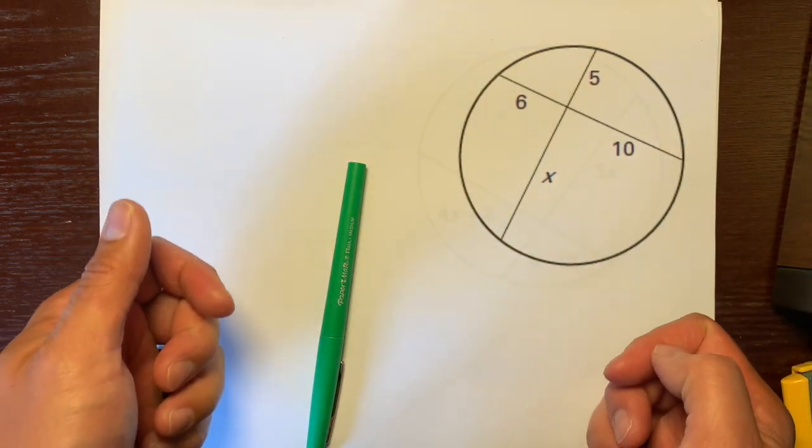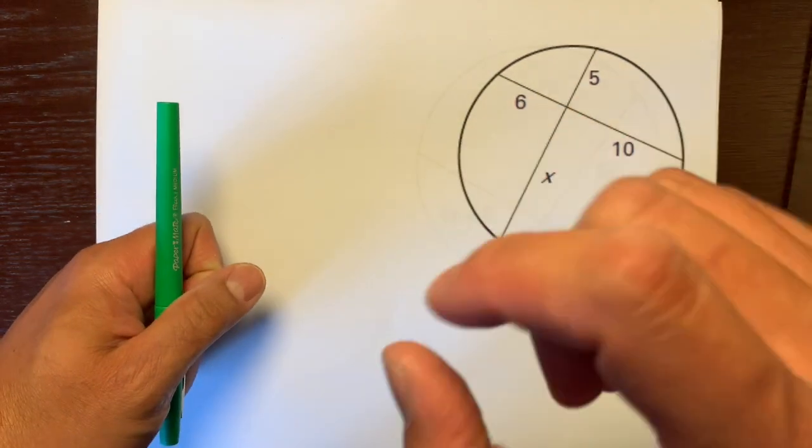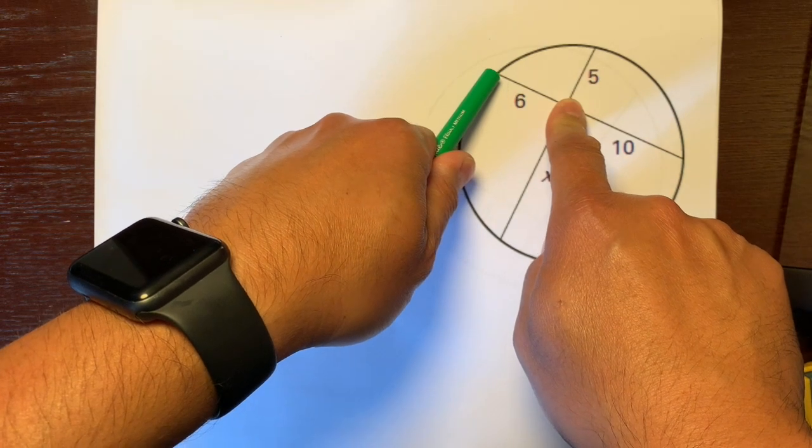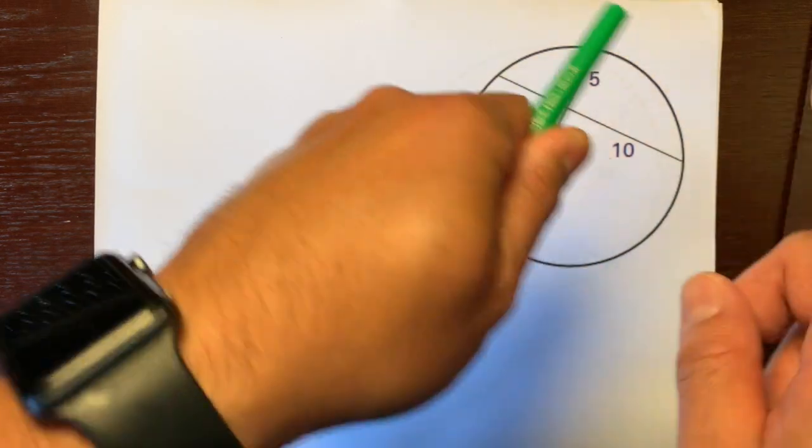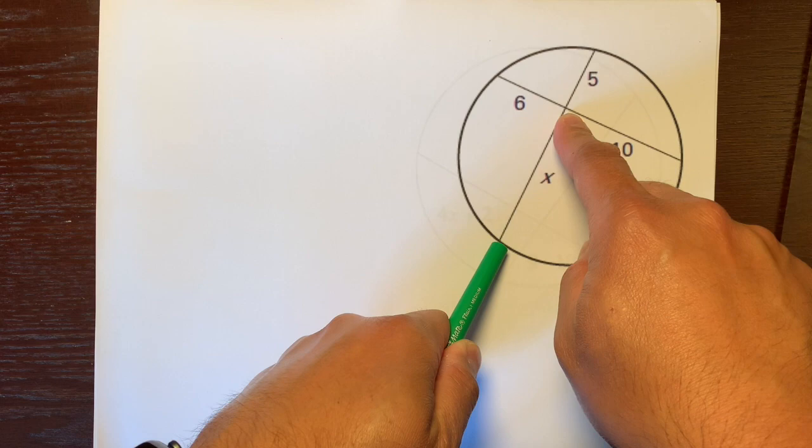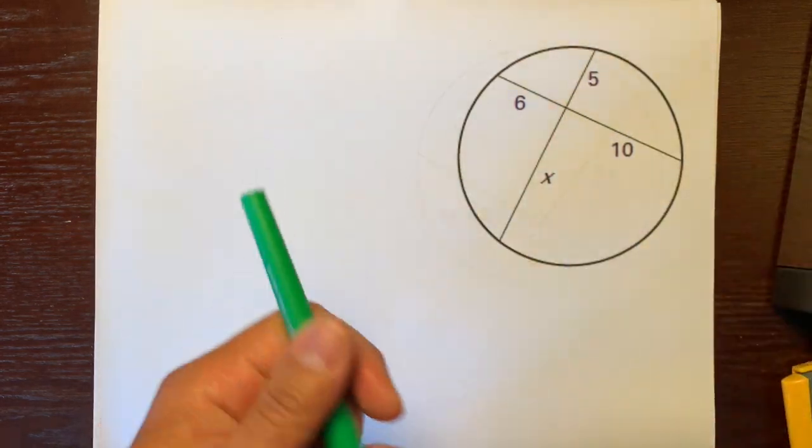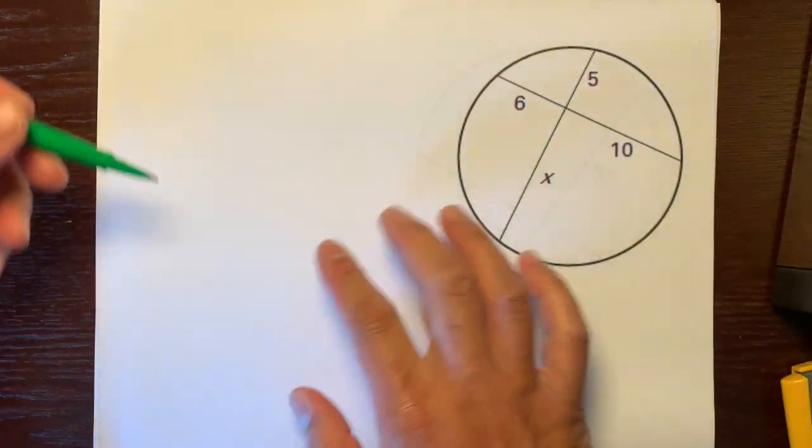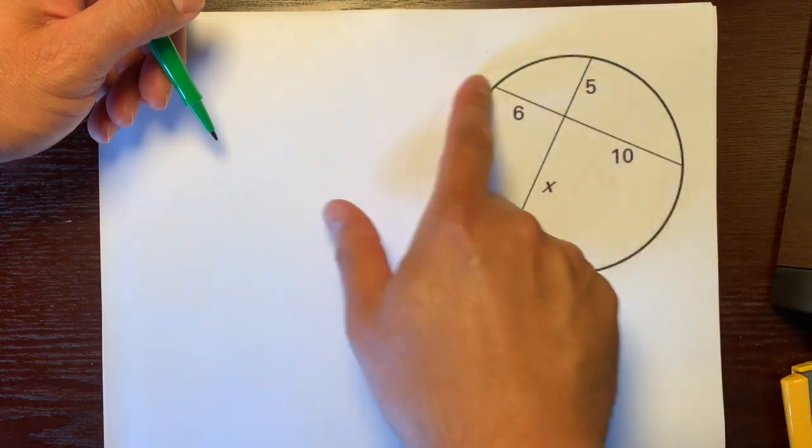The intersecting chords theorem is just the piece of one chord times its other piece is equal to a piece of the other chord times its other piece. So we'll focus on this first chord.